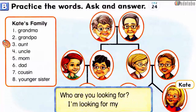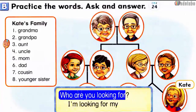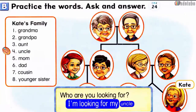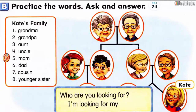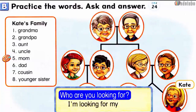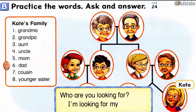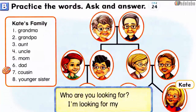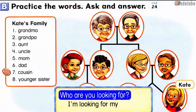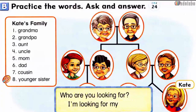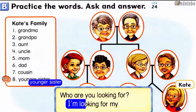Number 3: Who are you looking for? I'm looking for my aunt. Number 4: Who are you looking for? I'm looking for my uncle. Number 5: Who are you looking for? I'm looking for my mom. Number 6: Who are you looking for? I'm looking for my dad. Number 7: Who are you looking for? I'm looking for my cousin. Number 8: Who are you looking for? I'm looking for my younger sister.